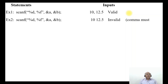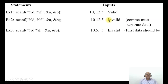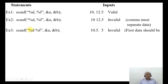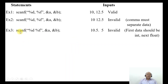If you use scanf("%d %f", &a, &b) with input 10, 12.5 but separate them with a comma in the format string, it is invalid because the delimiter must be consistent. Similarly, if scanf("%d %f", &a, &b) receives 10.5 and 5 as input, it is invalid because the first data should be integer and the next should be float, matching the order declared in the scanf statement.